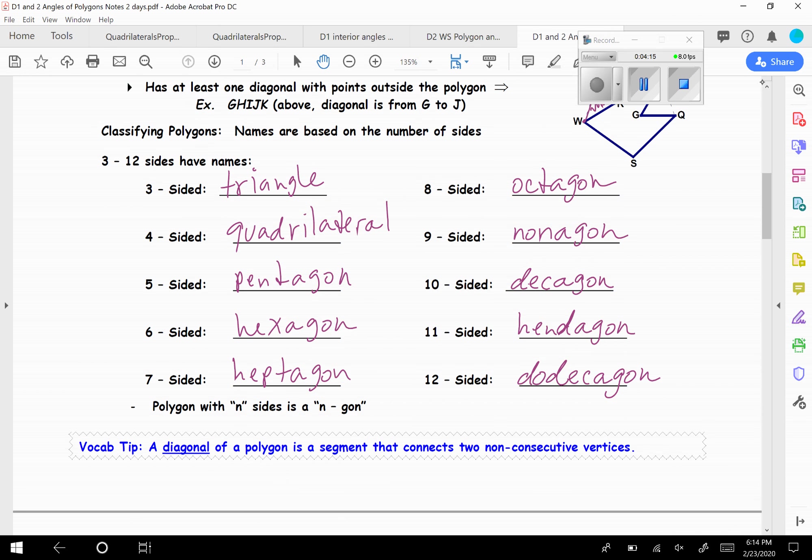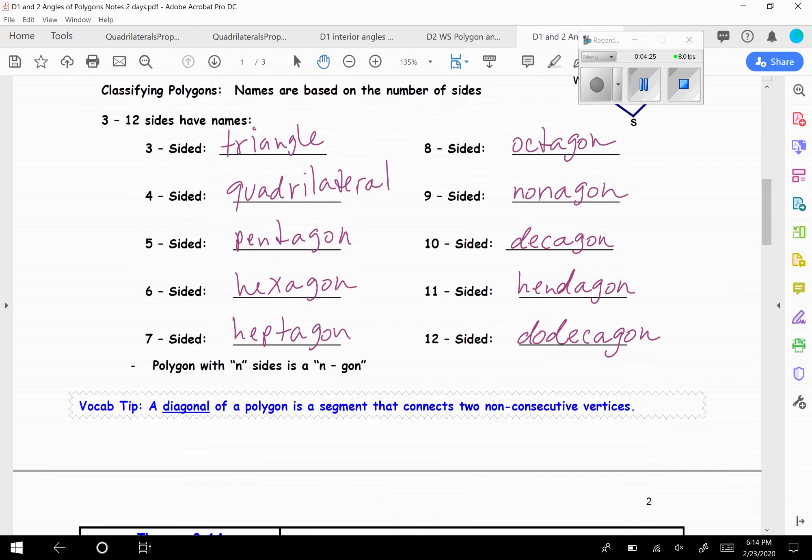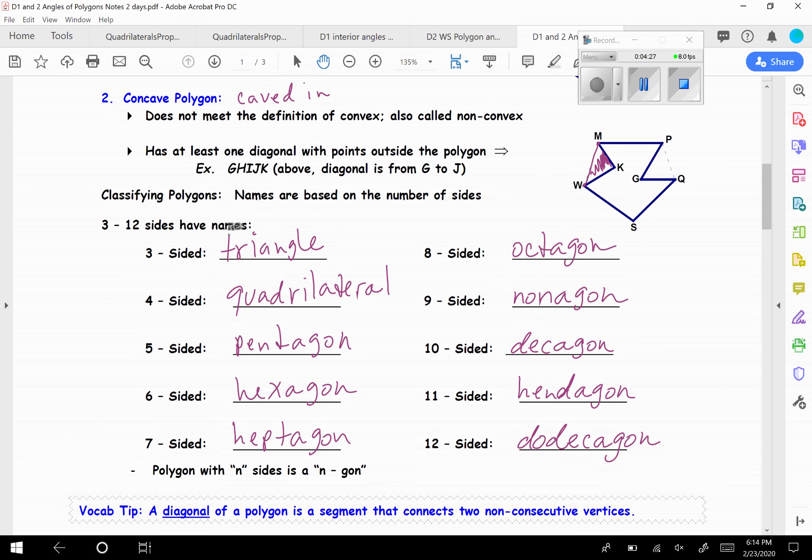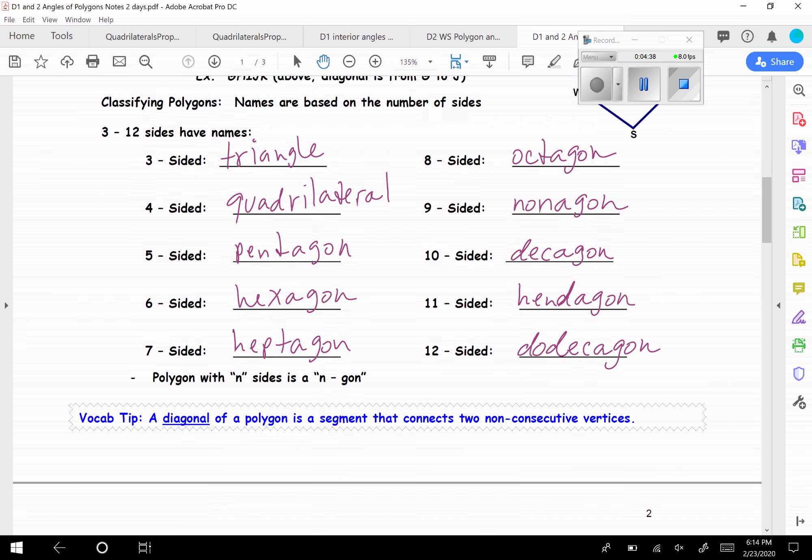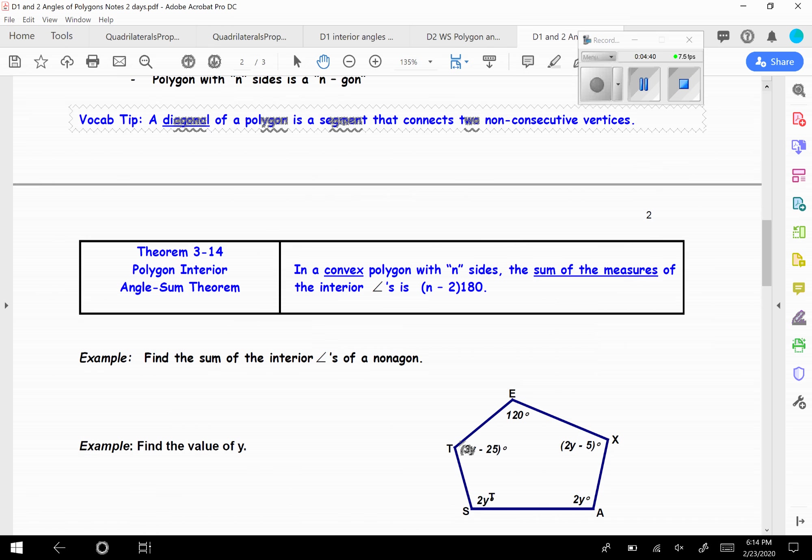And a vocabulary tip. A diagonal is a segment that connects two non-consecutive vertices. So that means they're not one right after the other. So up here in our picture, M, K, those are consecutive, because it's M and then K. But M, W, you have to skip over point K there. So that's why they're non-consecutive.